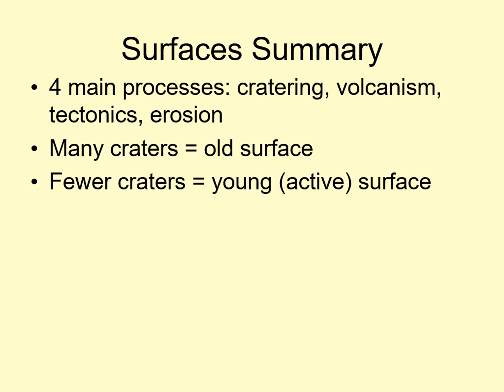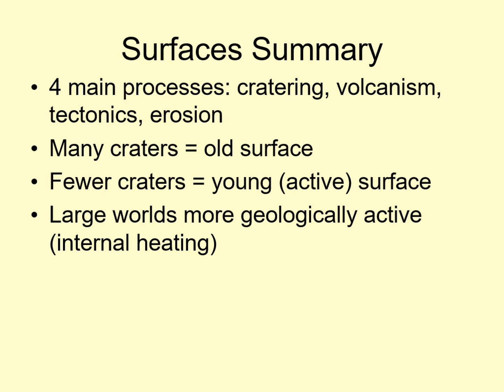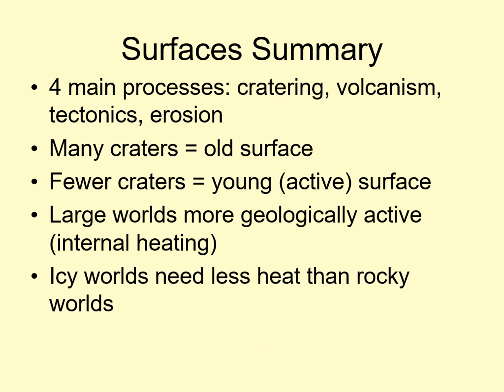Internal heating plays a key role in driving tectonics and volcanism, and it's indirectly important for erosion as well. We already know that larger worlds are more likely to be warmer inside than smaller ones, so larger worlds are more likely to be geologically active than smaller worlds. Earth and Venus are more geologically active than Mars, which in turn is more geologically active than Mercury or the Earth's moon. However, remember that ice melts more easily than rock, so an icy world can be active at a much smaller size than a rocky one. This is one of the reasons many icy outer solar system moons are geologically active, despite being smaller than Mercury.